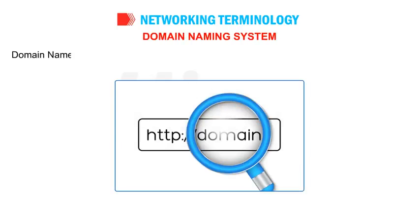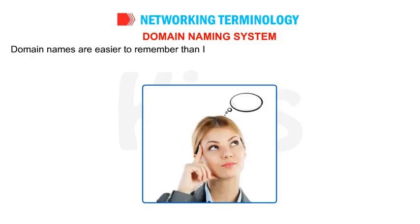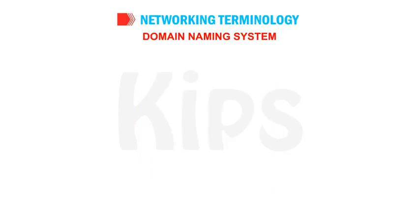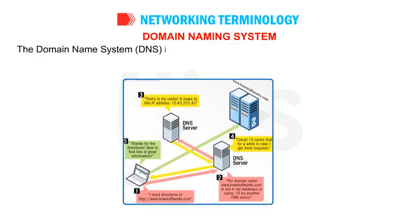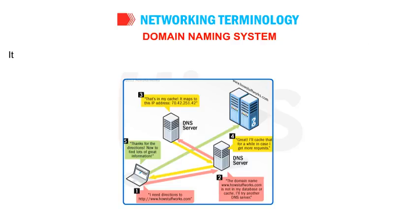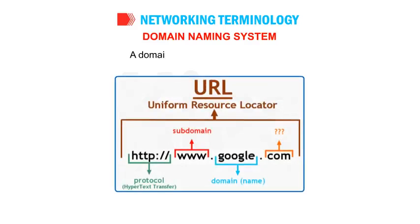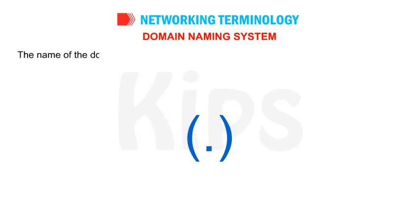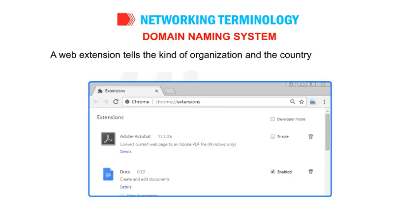Domain Naming System: A domain name is a unique name given to each website or resource connected to the Internet. Domain names are easier to remember than IP addresses. For example, the domain name for Google search engine is google.co.in and for Wikipedia it is wikipedia.org. The Domain Name System (DNS) is a system in which domain names are interpreted into IP addresses, since the Internet works only with IP addresses. It serves as a directory for the web by locating and addressing devices in a worldwide network. A domain name consists of two parts: the name of the domain before the dot symbol and the web extension after it. A web extension tells the kind of organization and the country it belongs to.